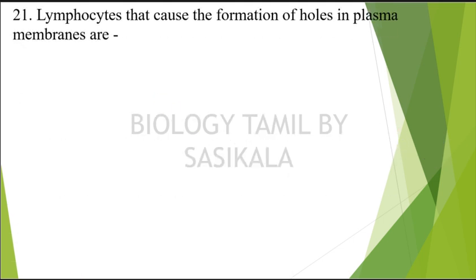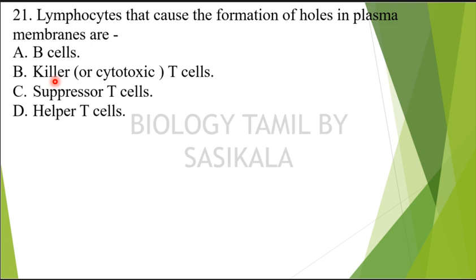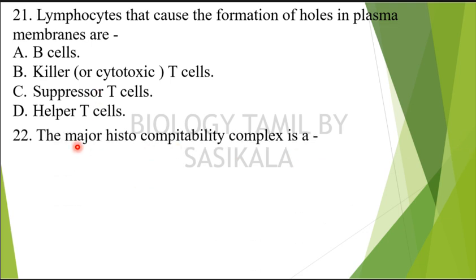Question 20: Lymphocytes that cause the formation of holes in plasma membrane — what do we say? The choices are: B cells, killer cells, suppressor T cells, helper cells. There are 4 choices — what is the answer?